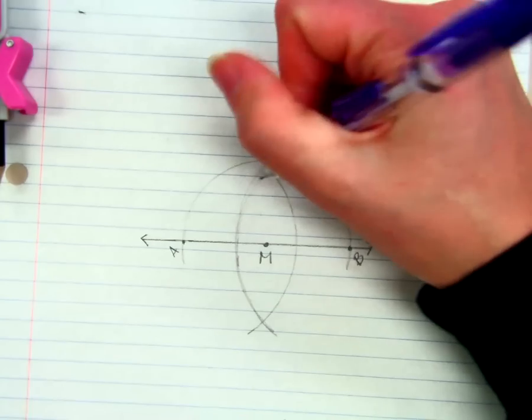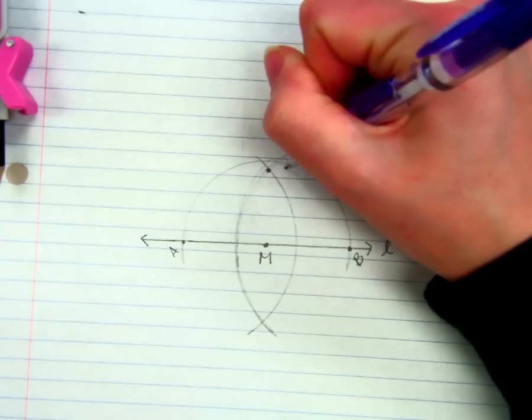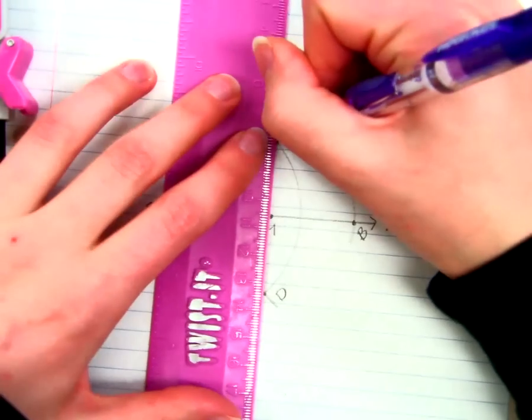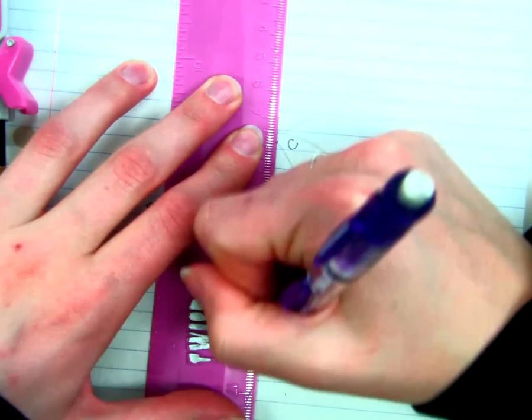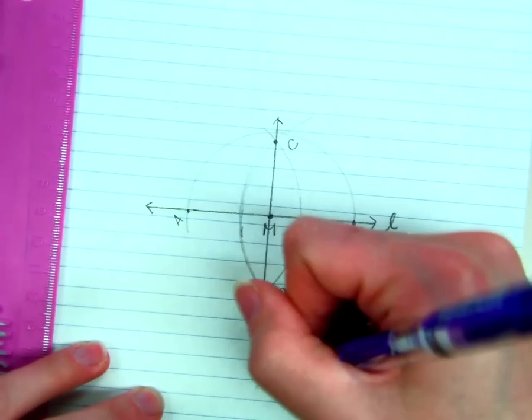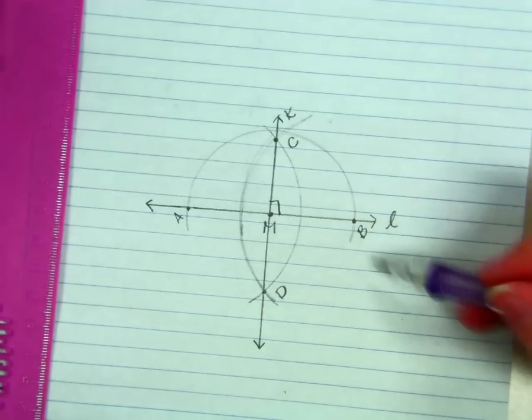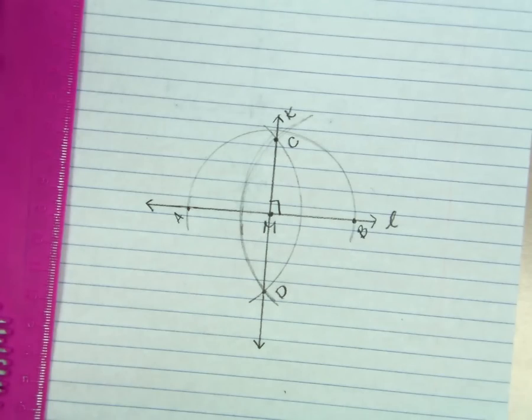And if I connect my points right here, C and D, I have a new line K that is perpendicular to my line L through M, which was already on the line.